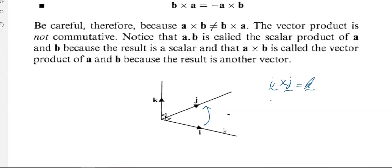Likewise, j cross k gives you i — moving in the corkscrew direction from j through to k, you move in the direction of i. And k cross i gives you j.